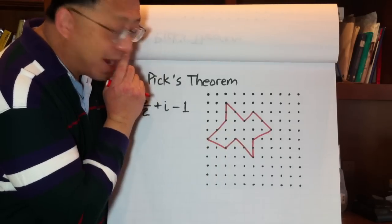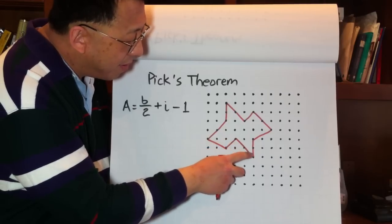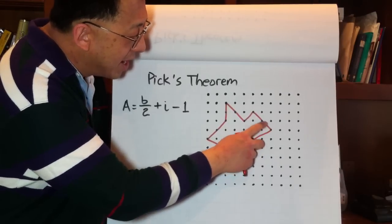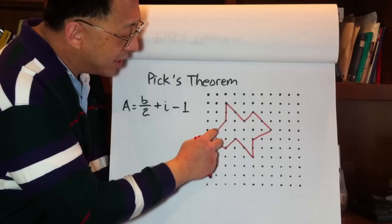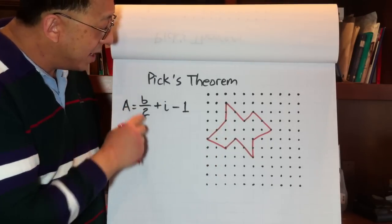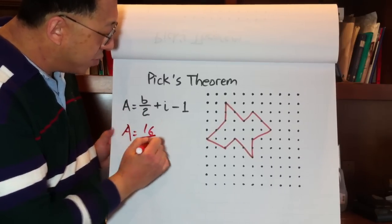Did I start? Hmm, can't remember where I started. Let me try again. I'm going to start at this point. 1, 2, 3, 4, 5, 6, 7, 8, 9, 10, 11, 12, 13, 14, 15, 16. Yes, okay, so there's 16. There are 16 points on the boundary.